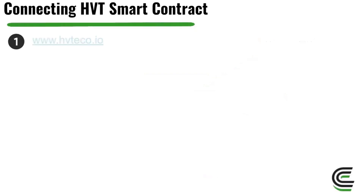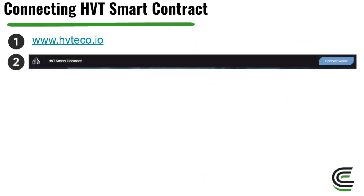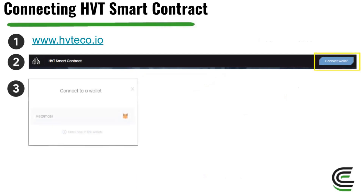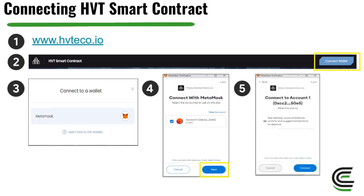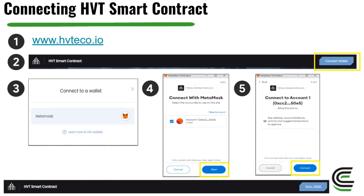Now, how do we connect our HVT smart contract? Go to www.hvteco.io. At the top right-hand corner you'll see Connect Wallet. Click that and it will bring up MetaMask. Click MetaMask and it will ask if you want to connect — it shows your accounts and wallet address. Click Next, then confirm one more time and click Connect. To check the connection was successful, go back to your HVT contract page, refresh it, and you'll now see your MetaMask address connected in the top right-hand corner — it no longer says Connect Wallet.